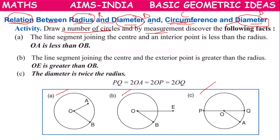We are drawing three types of circles — circle A, circle B, and circle C — and from these three circles we are going to measure the following facts. Suppose the center of each circle is O.